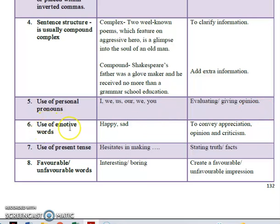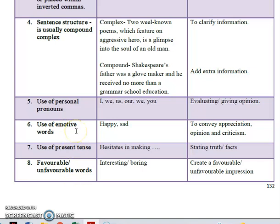Next, you have the use of emotive words. Examples: happy, sad. This is to convey appreciation, opinion, and criticism. Emotive words can go hand in hand with favorable or unfavorable words. They give the tone its purpose.